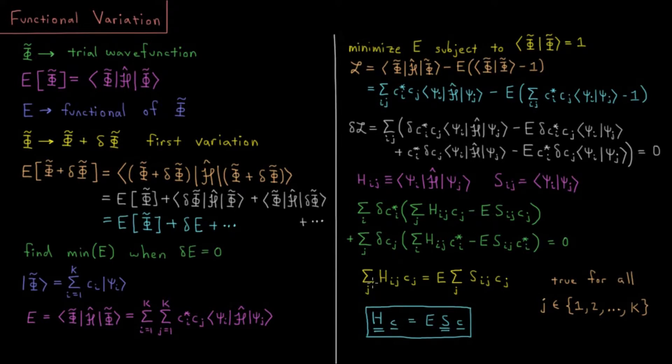Doing that math and getting the result, we have sum over j H_ij c_j equals E sum over j S_ij c_j. And this has to be true for all of the different i's and j's that you can imagine, all the way from one to k.